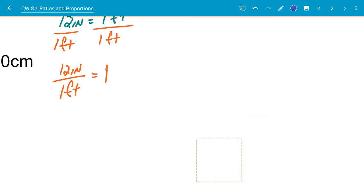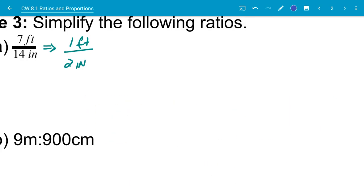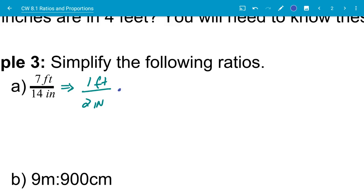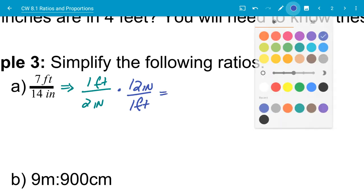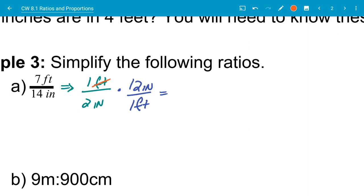So what we're doing right here with this one is we're going to take and we're going to multiply it by 12 inches over one foot. That's that unit conversion factor. When I do this, what happens is my feet cancel out, my inches cancel out. Now I get 12 over two. I get a ratio that has no units. And all I need to do from there is just to simplify it, which would be six over one. So that is a simplified ratio for seven feet over 14 inches.